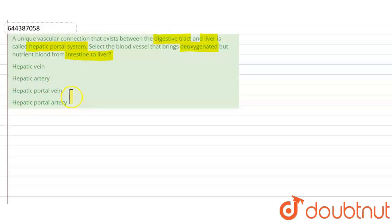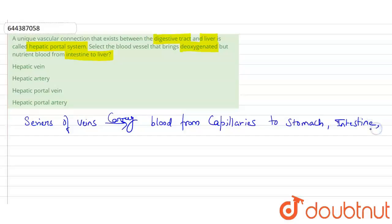So first, let's understand what the hepatic portal system is. The hepatic portal system is basically a series of veins which carry blood from capillaries to stomach, intestine, spleen, and pancreas to the liver. And what is its function?